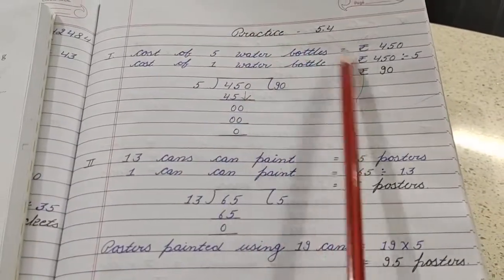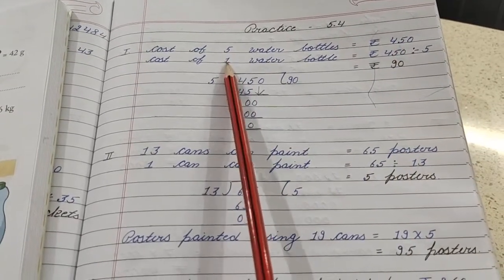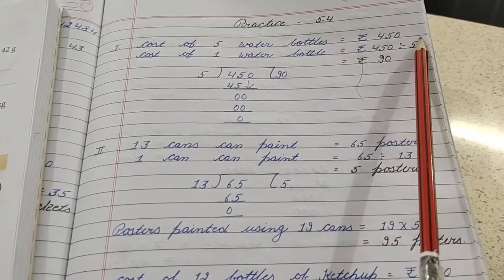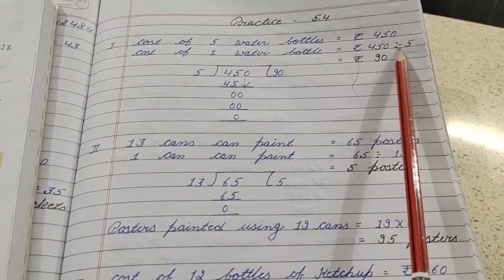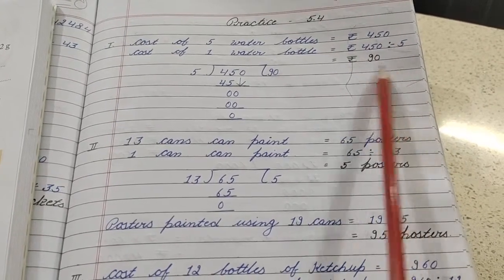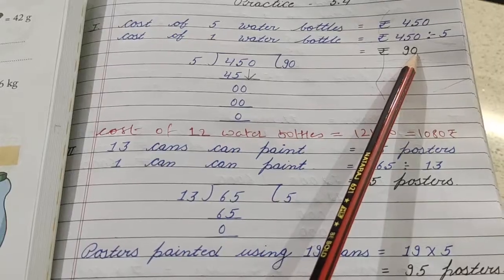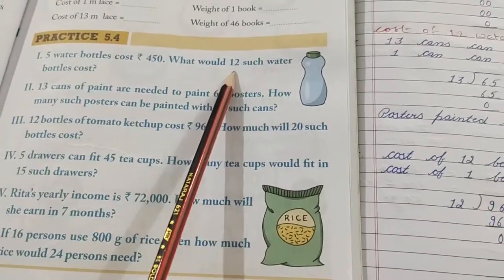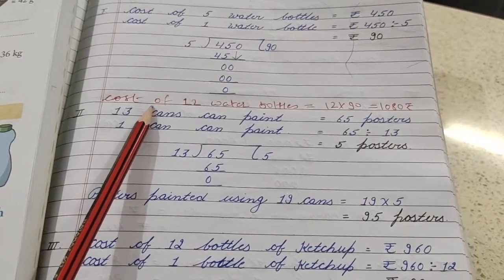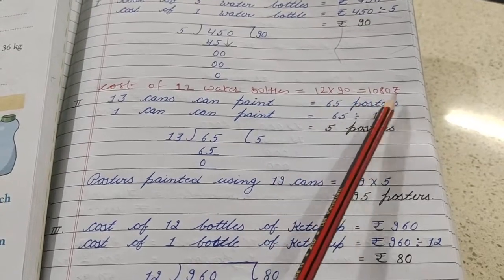Cost of 5 water bottles Rs. 450. So what did we say? We will come from 5 to 1. Cost of 1 water bottle can be found using division method. The bigger amount will be divided by the number of bottles. So 450 divided by 5 we will get 90. How many bottles? 1 bottle. And how many bottles cost was needed? 12 bottles. So 1 bottle cost times 12. We will multiply by 12. Cost of 12 water bottles equals 12 times 90 equals 1080.